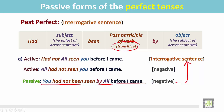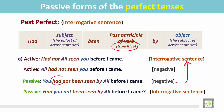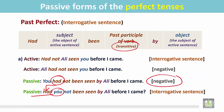Now change this negative statement into an interrogative sentence. Place the helping verb — the verb 'to have' — at the beginning of the sentence, before the subject. The negative statement has been changed into an interrogative sentence in the passive: 'Had you not been seen by Ali before I came?'